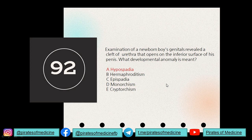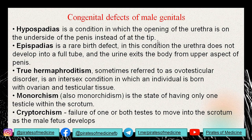Question 92: examination of a newborn baby's genitals revealed a cleft of the urethra that opens on the inferior surface of the penis. What developmental anomaly is meant? We have hypospadias, in which the urethral opening is located on the underside of the penis instead of the tip. Epispadias is a congenital birth defect in which the urethra does not develop into a full tube and the opening is on the upper part of the penis.